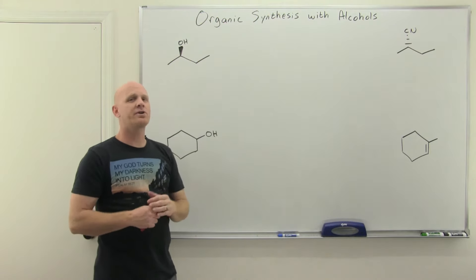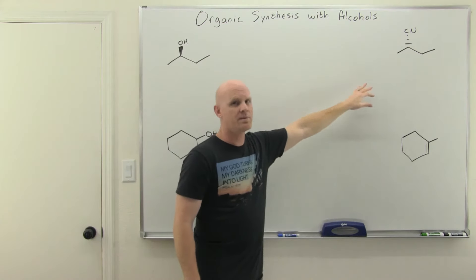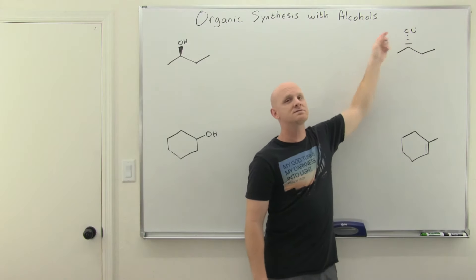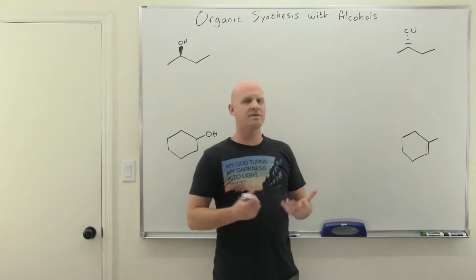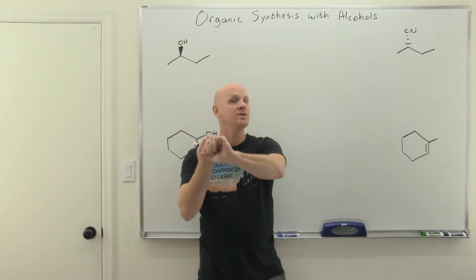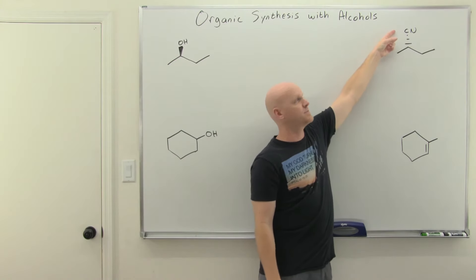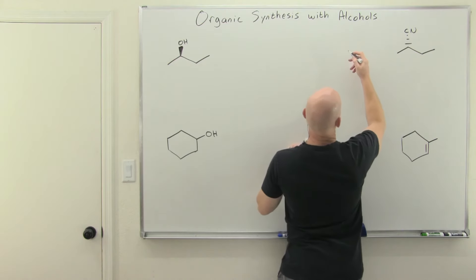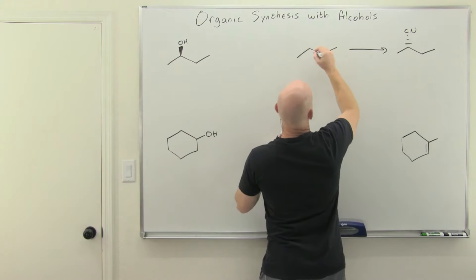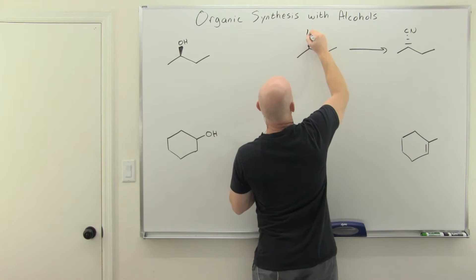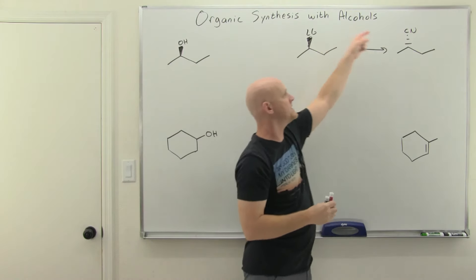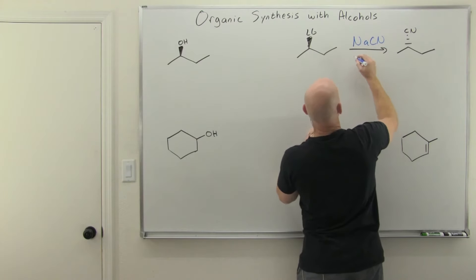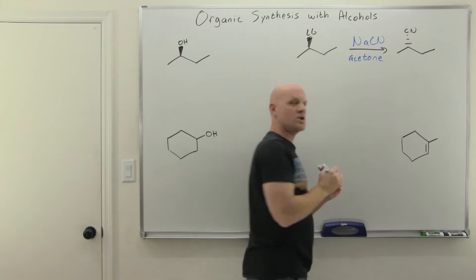First thing we want to do is match up our carbon skeleton between reactant and product. I've got a four-carbon chain to start with and end up with a four-carbon chain plus one extra carbon. When you get more carbons in the product than the reactant, you're thinking acetylide ion or Grignard reaction — except if it involves a nitrile or cyano group. The only way to add that cyano group is through an SN2 reaction, so we work backwards retrosynthetically: there must have been a leaving group with a wedged bond. We'd add sodium or potassium cyanide in a good aprotic solvent like acetone or DMSO.